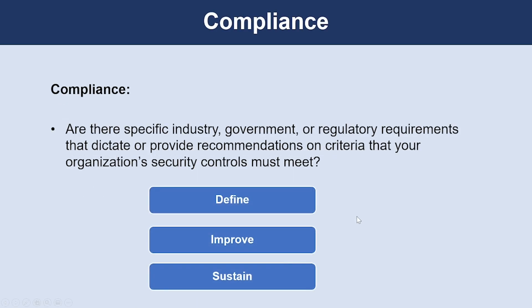The next thing we need to keep in mind is about compliance. Are there specific industry, government, or regulatory requirements that dictate or provide a recommendation on criteria that your organization's security controls must meet? Examples of such standards, organizations, controls, and legislations are ISO 27001, NIST, and PCI DSS.